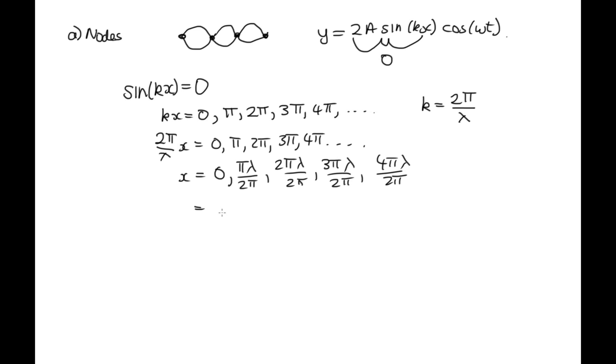So now we can simplify this down a bit. So we've got 0, these π's cancel out, so we end up with λ over 2. Then these cancel out, so we end up with λ. These π's cancel out, and we have 3 over 2 λ. And these cancel out, leaving a factor of 2, so we've got 2λ.